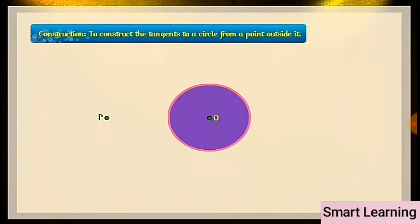Construction: To construct the tangents to a circle from a point outside it. We are given a circle with center O and a point P outside it. We have to construct the two tangents from P to the circle.